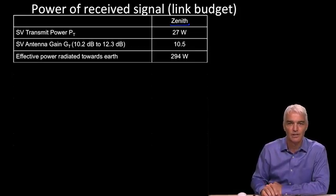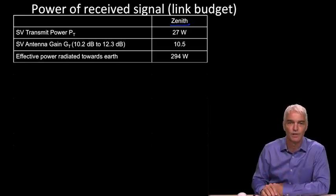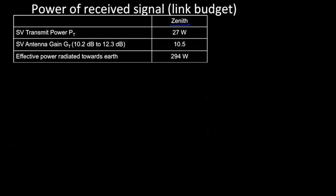So then the effective power radiated towards the Earth is just 27 times 10.5 is 294 watts. So remember, we pretend that that's the power from the satellite in all directions. And for this particular direction, it's going to work out right.